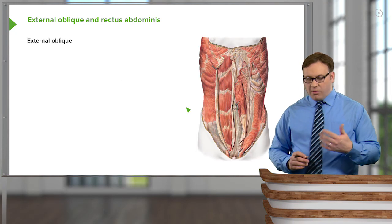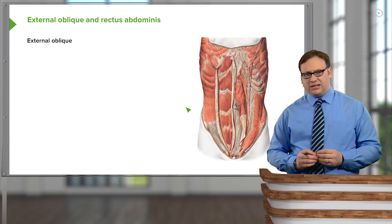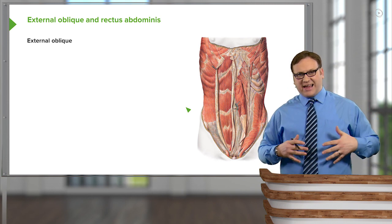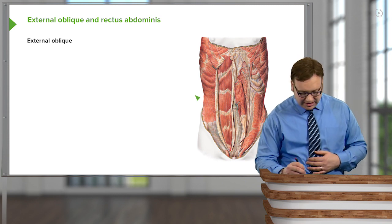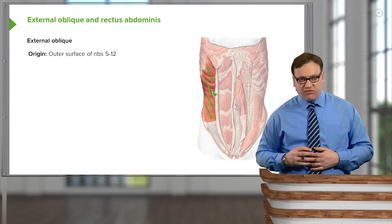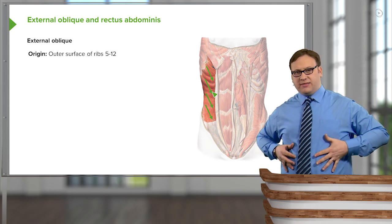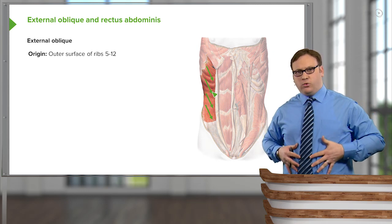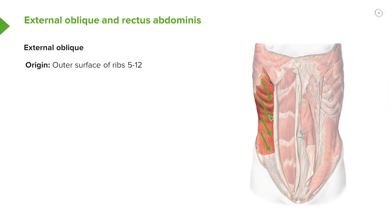Let's start with external oblique. External oblique is an important muscle and its fibers run downwards and forwards — like putting your hands in your pockets — running in this direction towards the midline. The fibers originate from the surfaces of ribs 5 to 12, which we can see noted here.